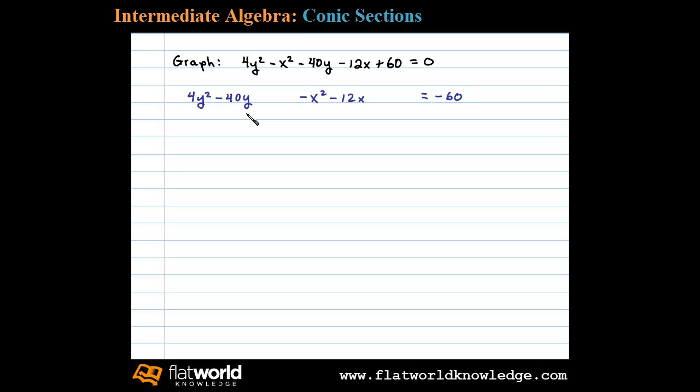Now we will complete the square for each grouping. For the y terms, we need to factor out a 4, which leaves us with y² - 10y. For the terms involving x, we'll factor out a -1, leaving us with x² + 12x = -60.